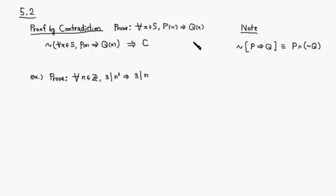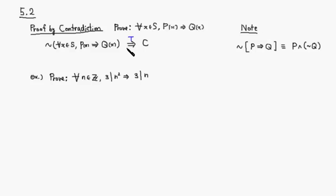In order to prove this, for the sake of argument, we're going to assume the opposite. So we assume that not for all x in S, p of x implies q of x — that's the negation of what we want to show. Then we are trying to establish that this actually implies, so it's going to be a true implication.